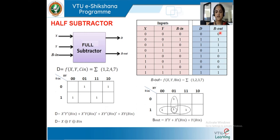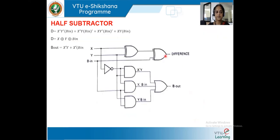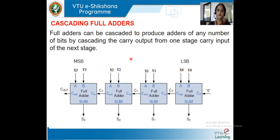For the B_out K-map, B_out is high for inputs 001, 010, 011, and 111. After grouping, we get the equation for B_out. The logical diagram for the full subtractor is then drawn from these equations.